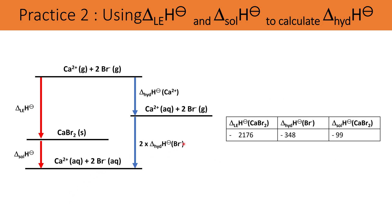Now let's look at another example where we calculate an enthalpy change of hydration. Remember the enthalpy change of hydration is always split into two parts — one for each ion. With calcium bromide, CaBr₂, there are two bromide ions, so the enthalpy change of hydration of bromide must be doubled in any calculation.